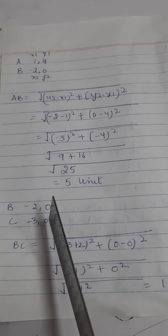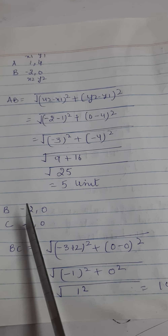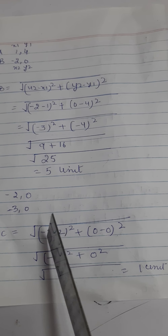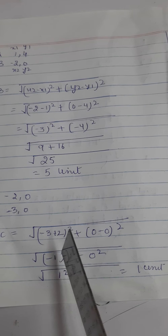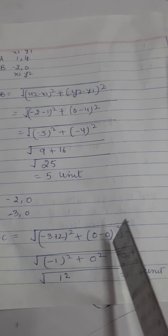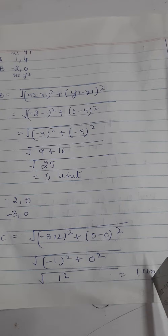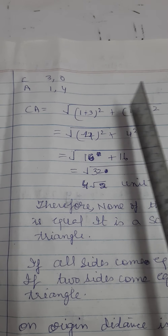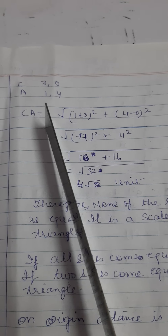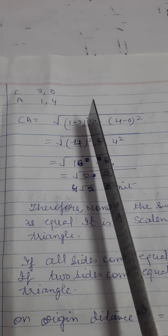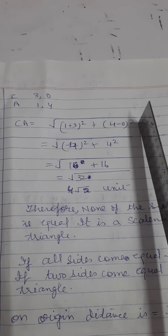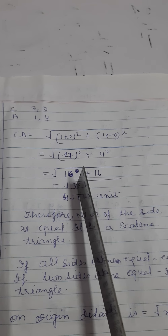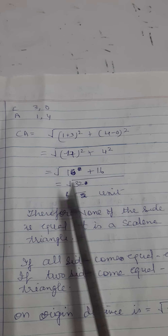Similarly, we take out the length of side BC with coordinates B(−2, 0) and C(−3, 0). Using the distance formula: √[(−1)² + (0)²] = √1 = 1 unit. Now for side CA, with C(3, 0) and A(1, 4): √[(1 − 3)² + (4 − 0)²] = √[4 + 16] = √32 = 4√2 units.